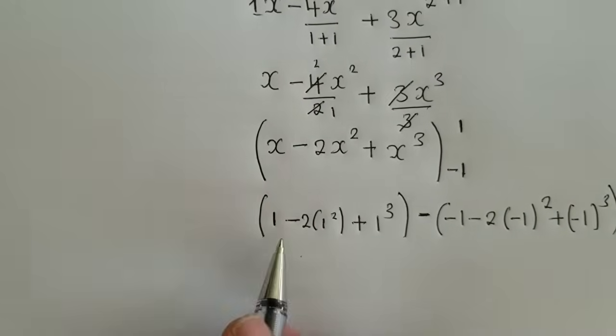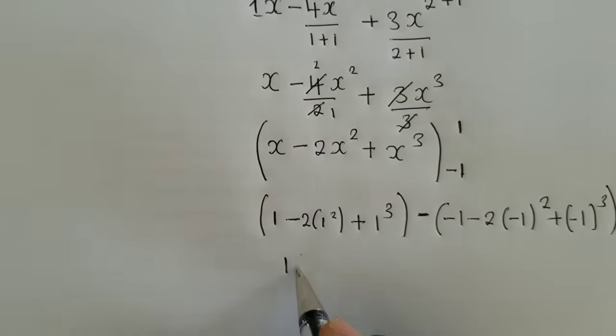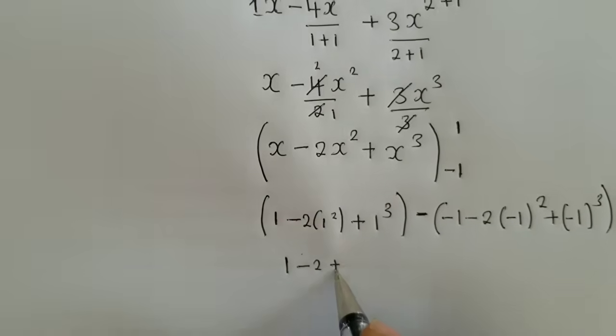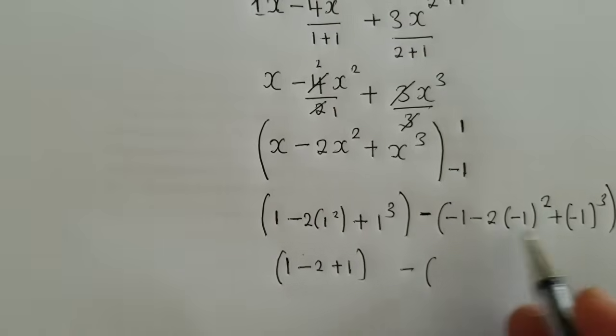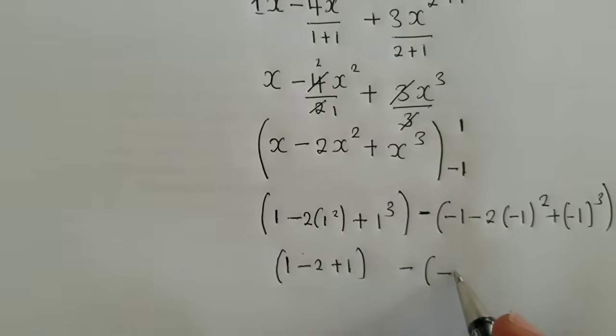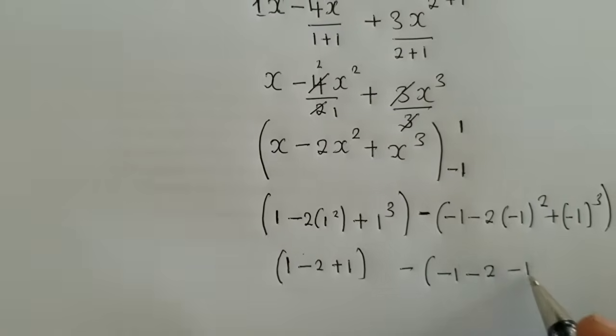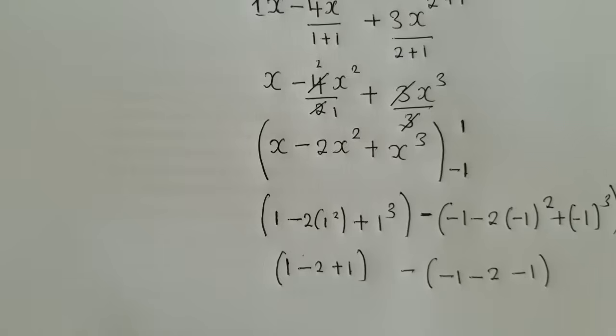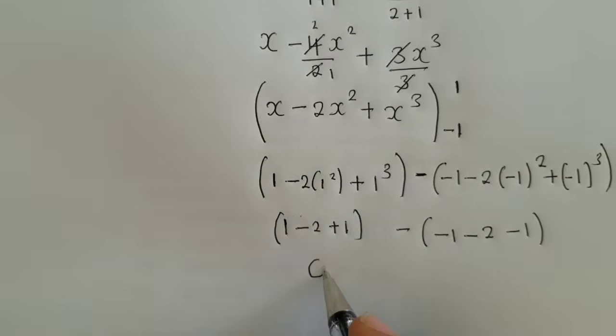So we now simplify. When we work out what is inside here, we are getting a 1 minus 2 plus a 1 like that. So now, here, if you're able to see, we'll just get a 0.